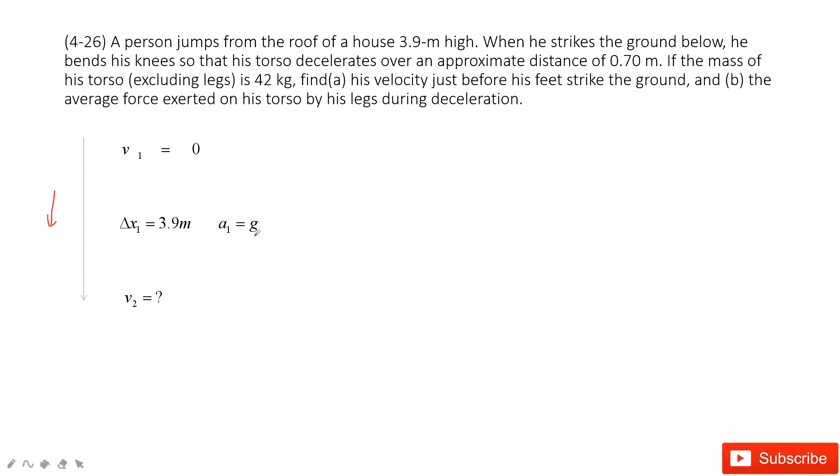The next part is this person just does something to make him stationary. So he bends the knees. So in this one, the final velocity for him is 0, and the displacement for the body is 0.7 m. Then we want to find the acceleration.